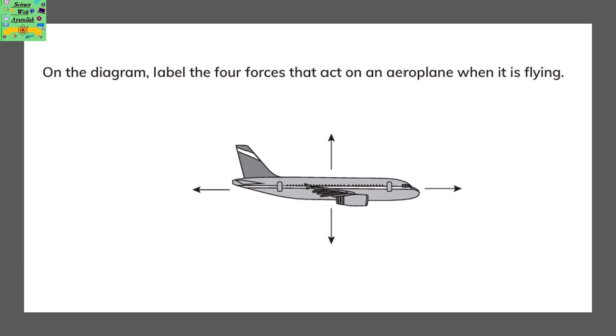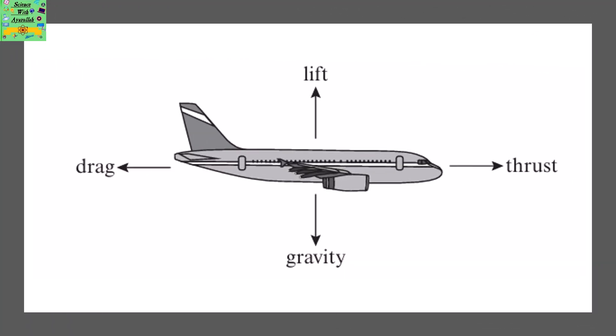On the diagram label the 4 forces that act on an aeroplane when it's flying. The 4 forces that are acting on the aeroplane when it's flying is the lift force that is keeping it upwards, thrust that pushes it forward, drag that pushes it backwards and gravity that is pulling it downwards.